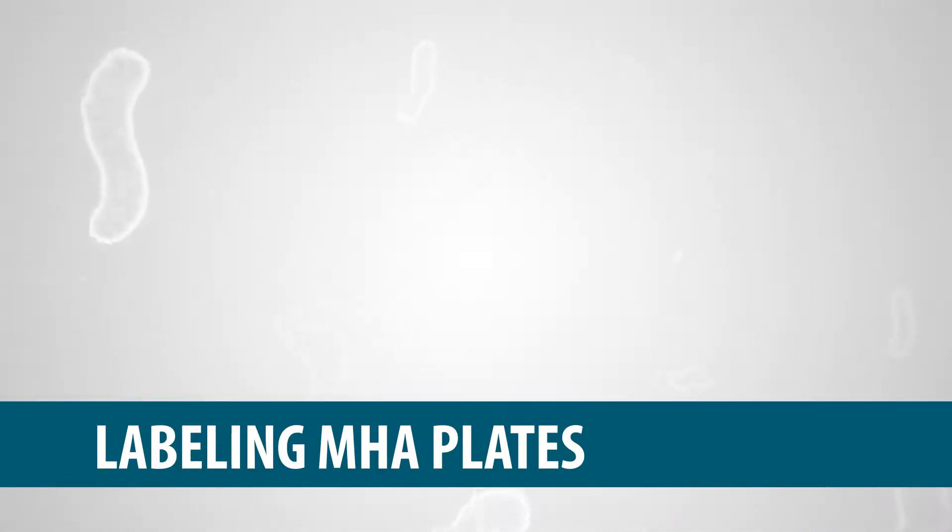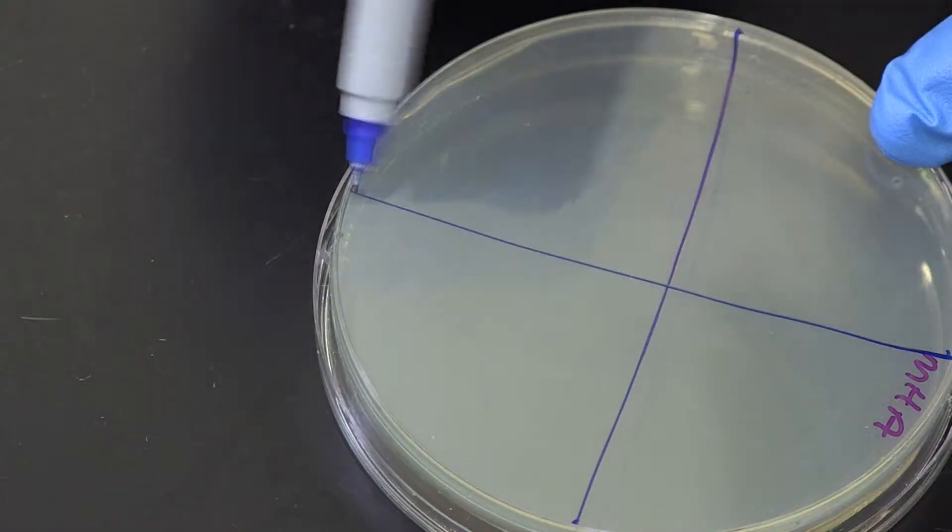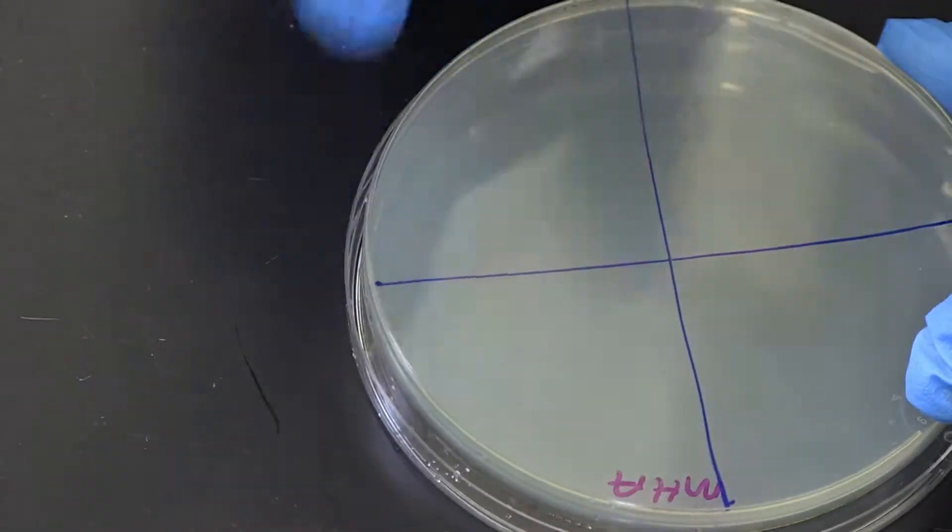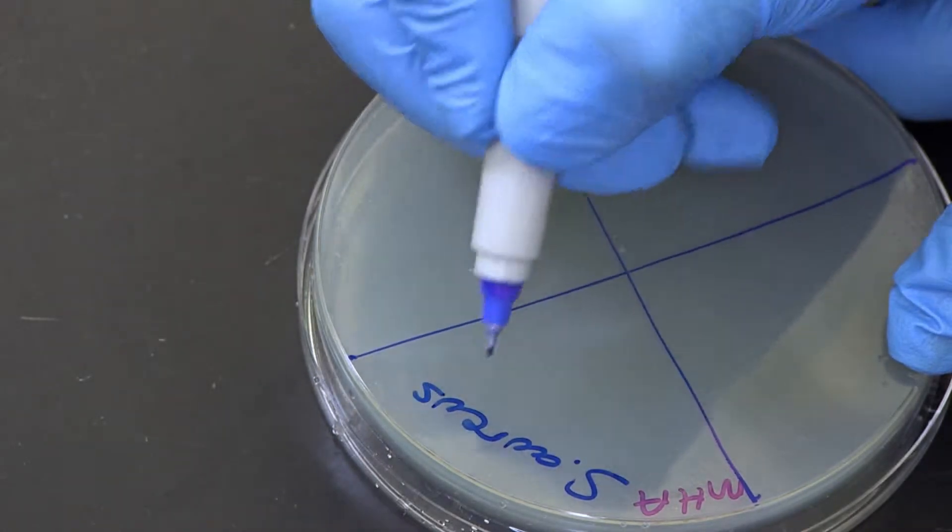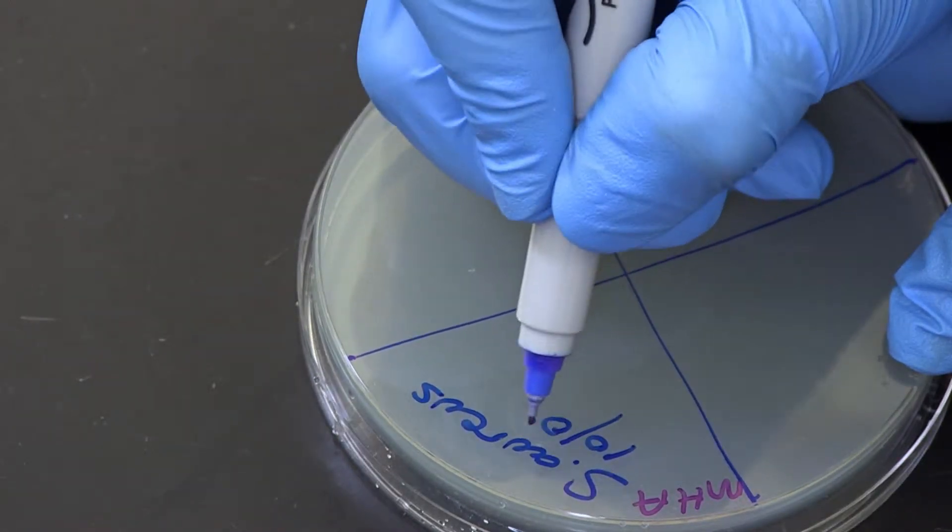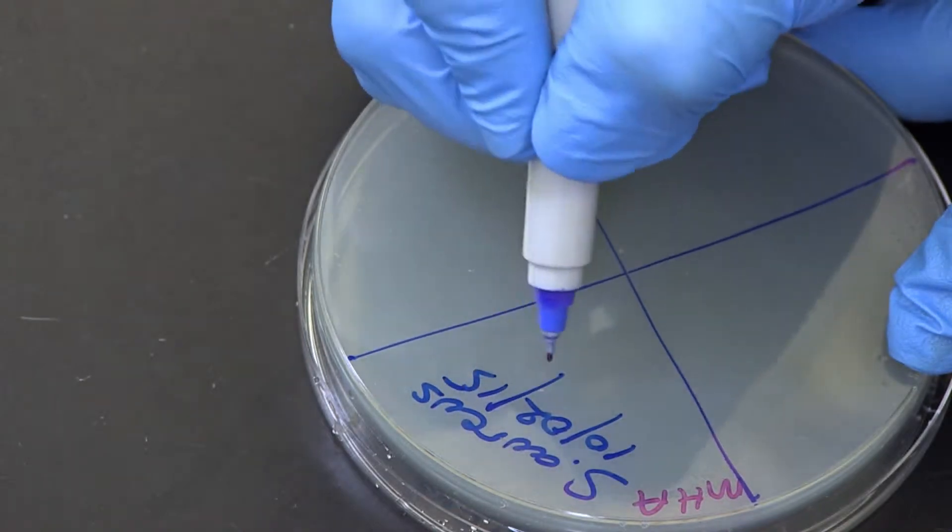Labeling Muller Hinton Agar Plates. Appropriately label each Muller Hinton Agar, or MHA, plate for each organism to be tested. Then divide each plate into four quadrants with a permanent marker.